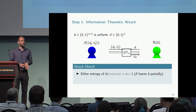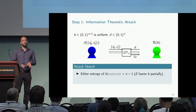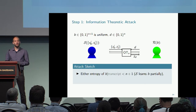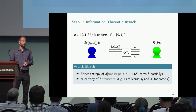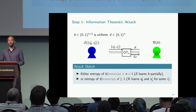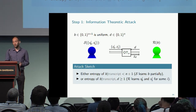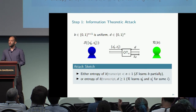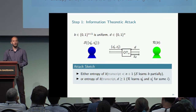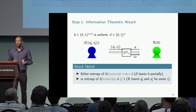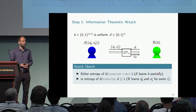Assume there is no sender attack — meaning the receiver's input B conditioned on the transcript still has full entropy. That allows us to also condition on D, the input to the ideal OT, which has at most n bits of entropy since it is an n-bit string. So there is at least one bit of entropy remaining, and this actually leads to an attack by the receiver.